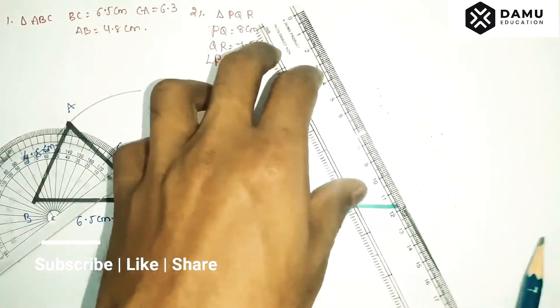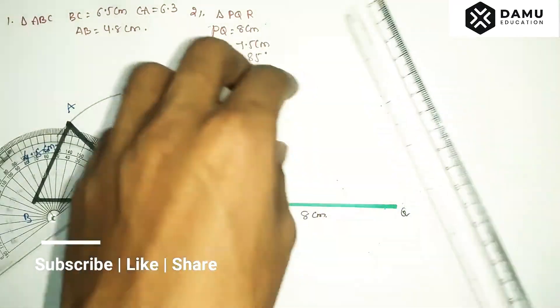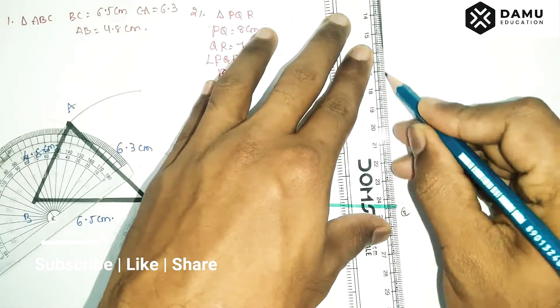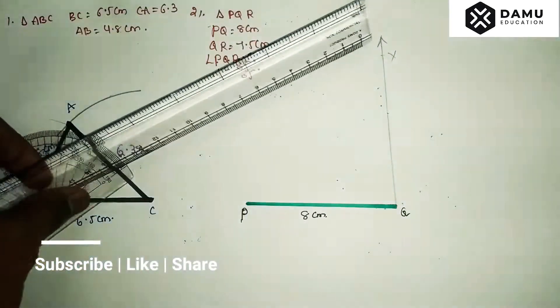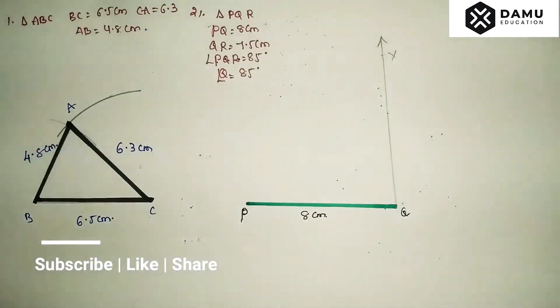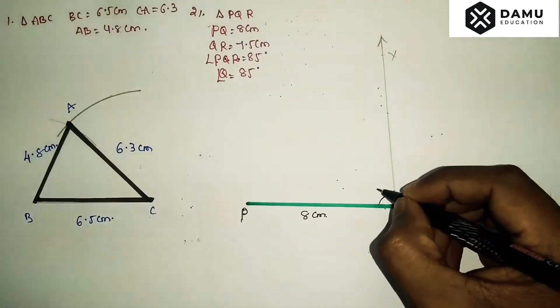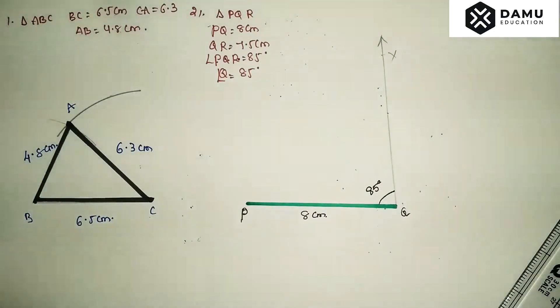Draw one ray from this, draw one ray that is QX with the angle 85 degrees.